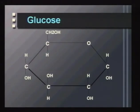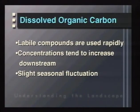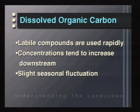When we look at the amounts of material we find in ecosystems, we tend to see that labile compounds are used very, very rapidly. The concentrations of dissolved organic carbon tend to increase as we go downstream, and generally that represents an increase in the amount of refractory organic material, with very slight seasonal fluctuations as a result. A good analogy would be if I put out a buffet table piled full of foods — some of which you dearly love, like cakes, pies, brownies, and cookies.